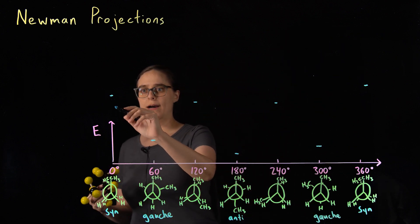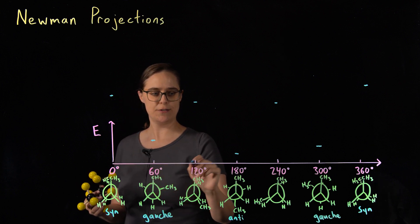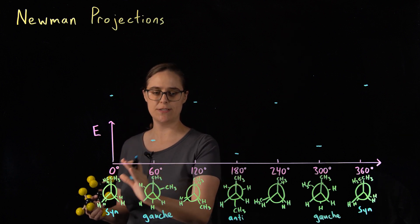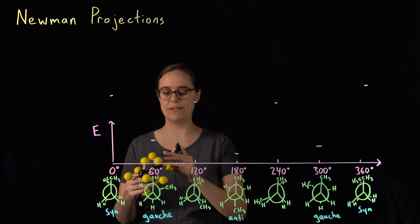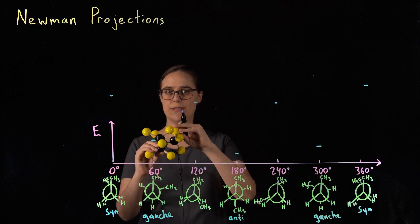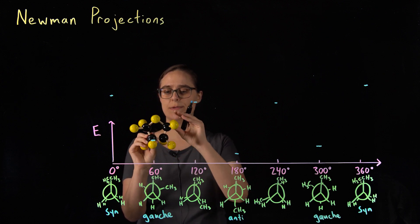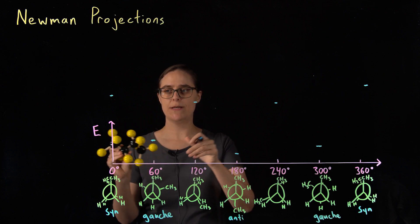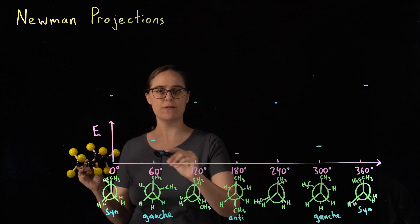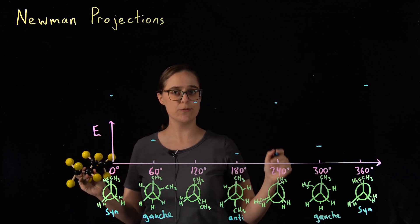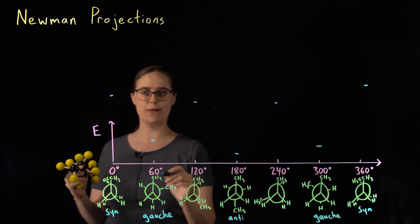Now, I have given you potential energies and Newman projections for certain specific conformations, but any of those in-between angles are also possible conformations. This bond can just freely rotate. So I want to show you what the full potential energy diagram looks like for those in-between conformations.